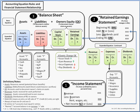That ending retained earnings figure helps us build the final financial statement — the balance sheet. The balance sheet is simply a listing of our assets, which are resources owned by the company, a listing of our liabilities, which document the creditor claims on those assets, and finally owner's equity, which documents the owner's claims on those assets.